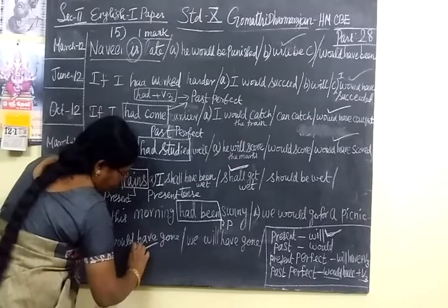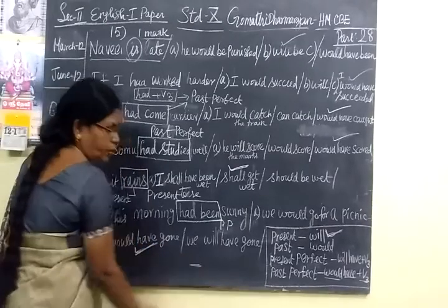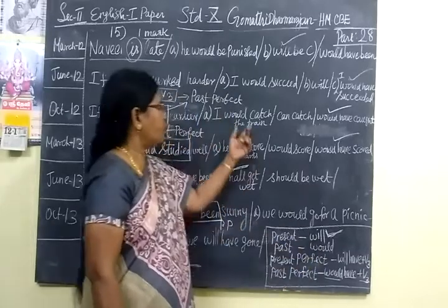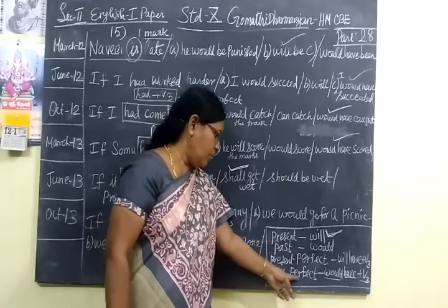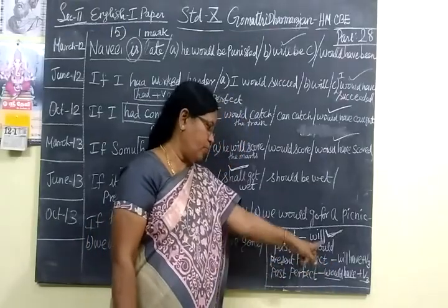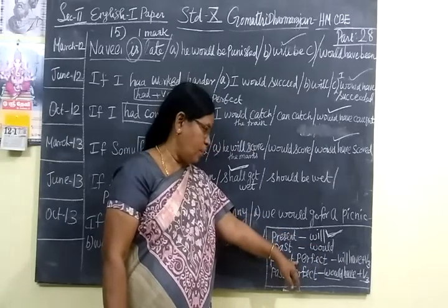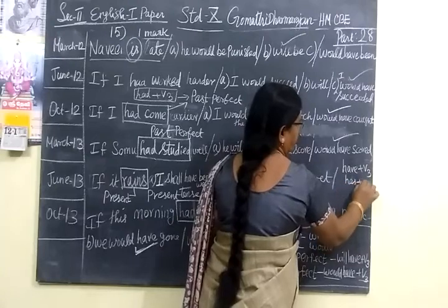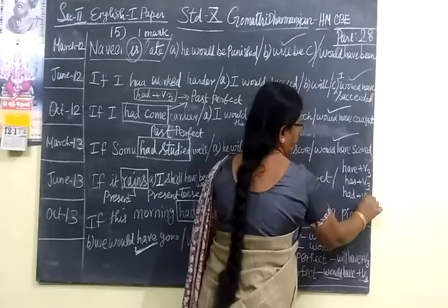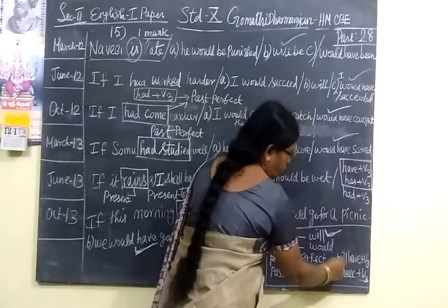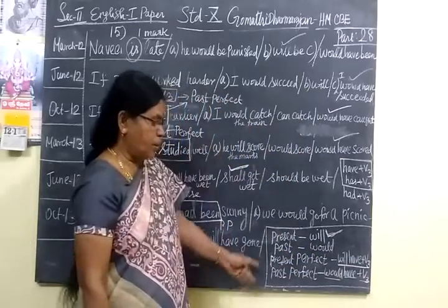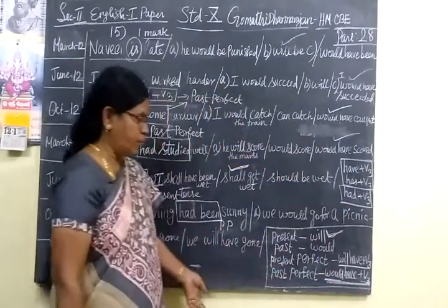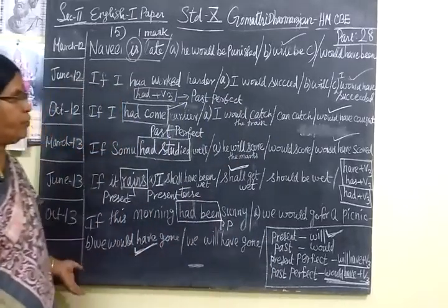Would + have + third form — so this only you are choosing. This is a very, very easy topic. Present tense means you are choosing 'will.' Past tense means 'would.' Present perfect means 'will + have + third form' or 'have + third form' / 'has + third form.' Past perfect means 'would + have + third form' or 'had + third form.' Once you know the rules, everyone can attend this. Bye.